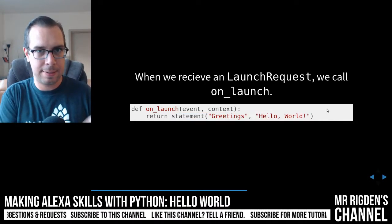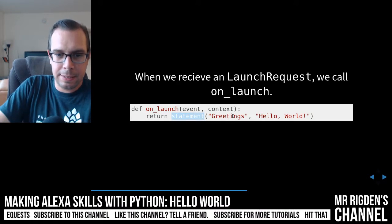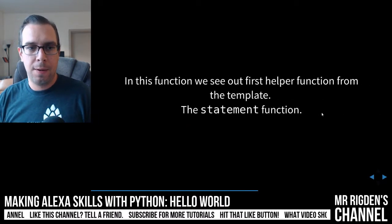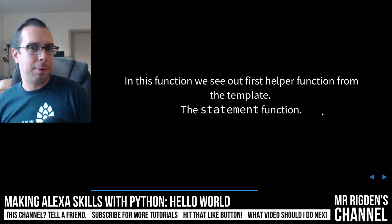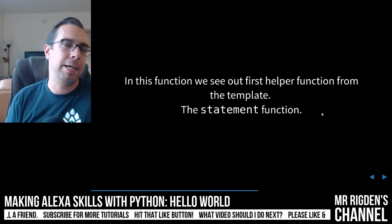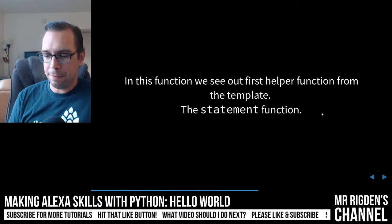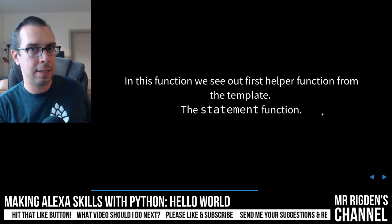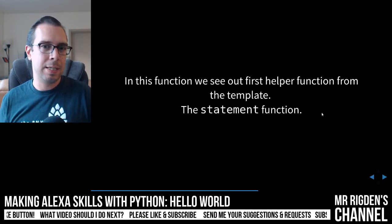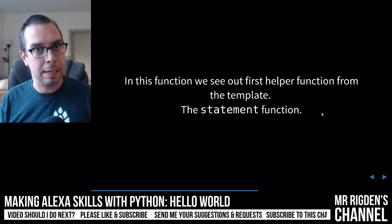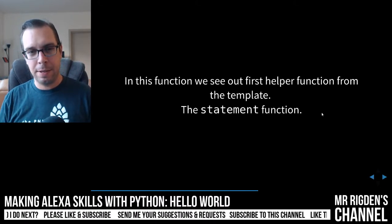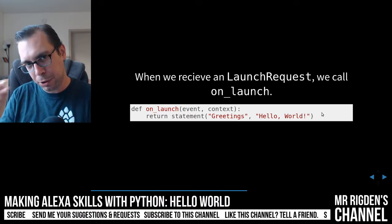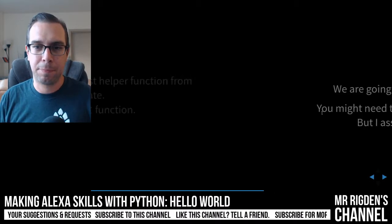It calls another function and returns that return value. It's going to call statement and give it two arguments: a string 'greetings' and a string 'hello world'. In this function we see our first helper function from the template. The statement function isn't something built into Alexa — it's something I made as a helper template. I made it so that this function is only like one line instead of like a dozen lines, so we can take it piece by piece and walk step by step.